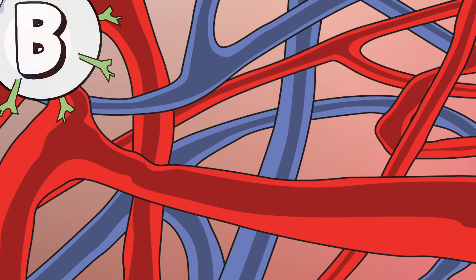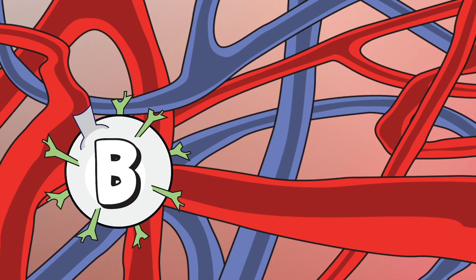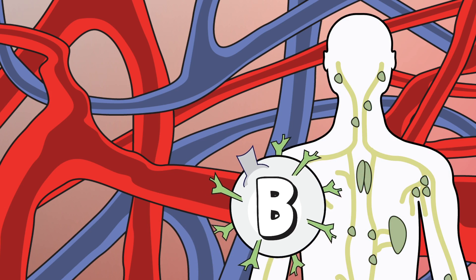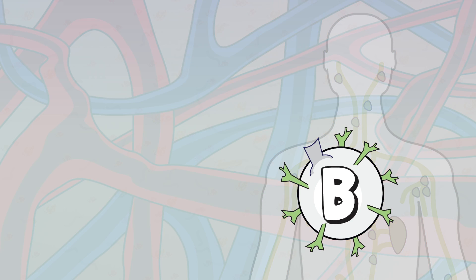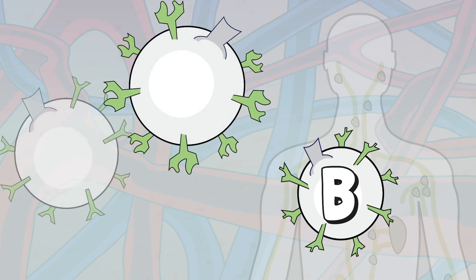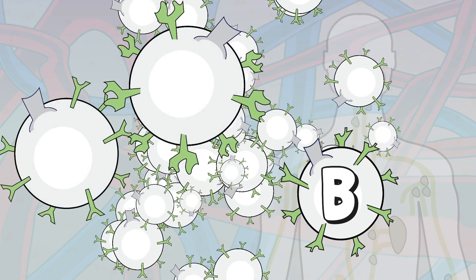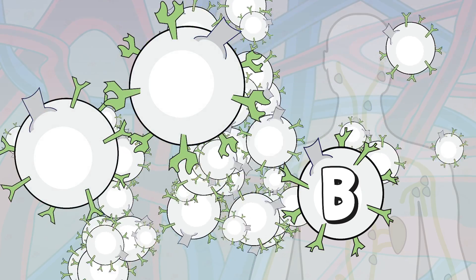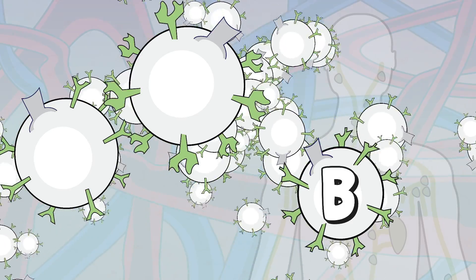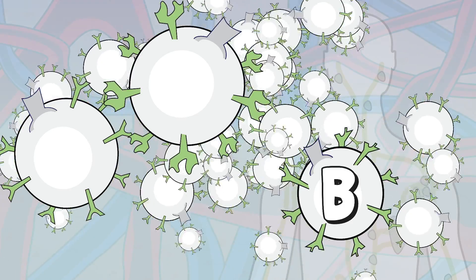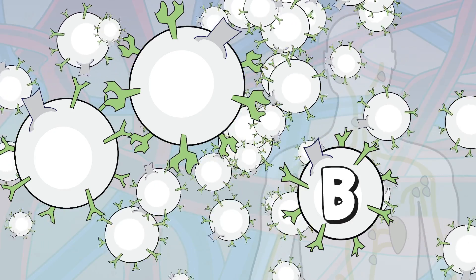B cells are found circulating in the blood and they are also stored in the lymph system. The surface of the B cell is covered with antibody receptors precisely matched to specific antigens. For this reason, there are a countless number of unique B cells found in our blood and lymph system, each ready to respond if it encounters an antigen that matches its own surface receptor antibodies.